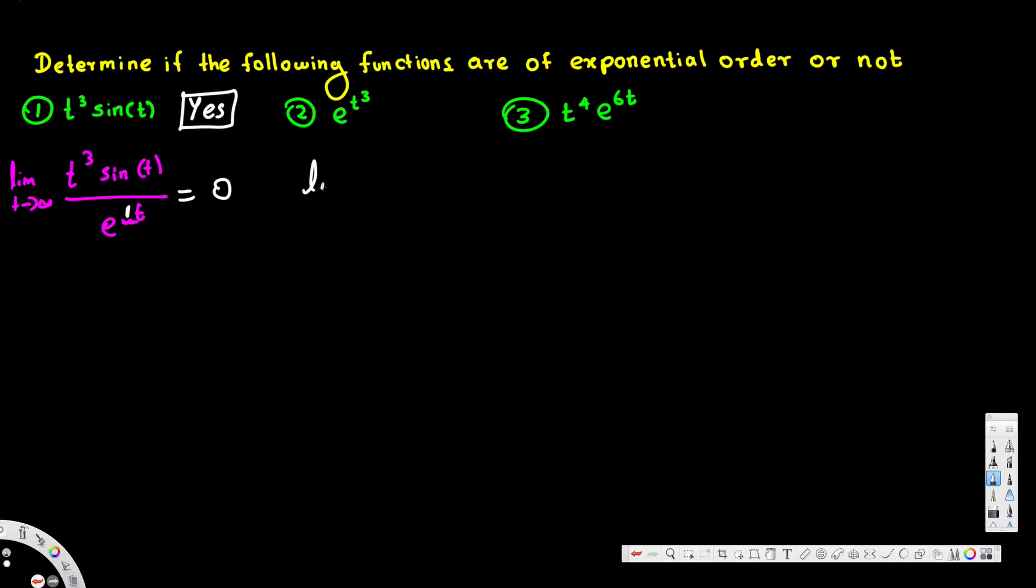Now let's look at the second one. Again, same thing: limit as t approaches infinity, and we put e to the t cubed divided by e to the power of something times t. Now we have to think about, can any number make this zero? We have t cubed, which is a cubic function; here we have a